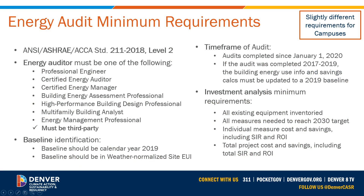Now let's dive into the required documents, starting with the energy audit. The audit must follow ASHRAE Standard 211-2018 and be a Level 2 audit. The energy auditor must be a third party and have one of the licenses or credentials listed on the screen. The audit should use calendar year 2019 as the baseline year, and the energy data should be in weather-normalized site EUI. The audit must have been completed no earlier than January 1, 2020. If completed before that date, the energy use data and savings calculations will need to be updated to the 2019 baseline.